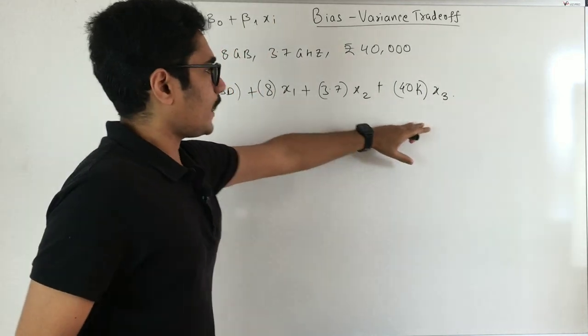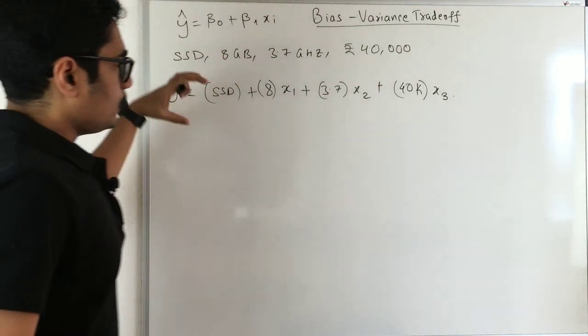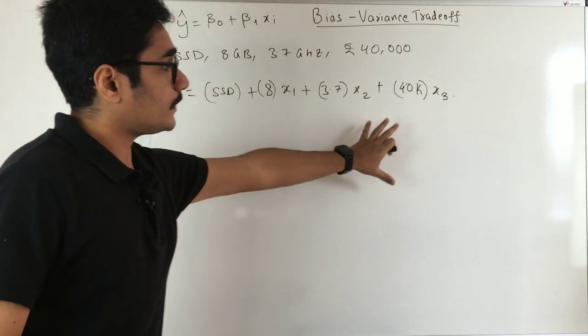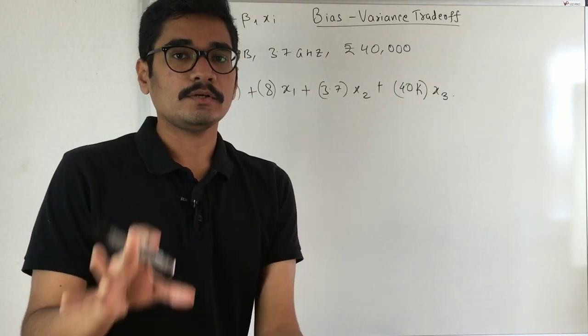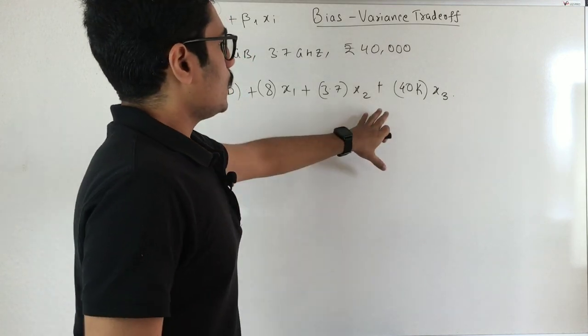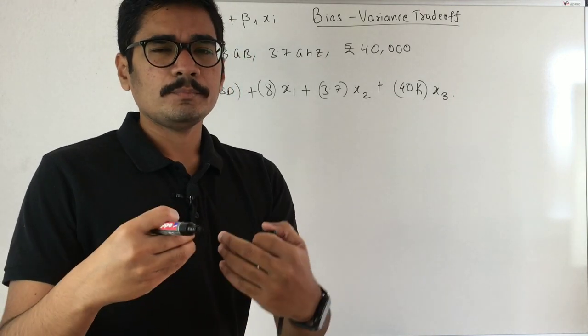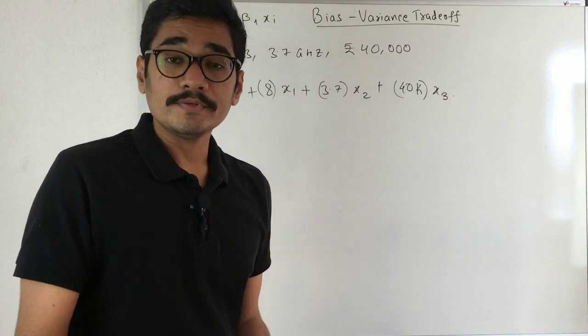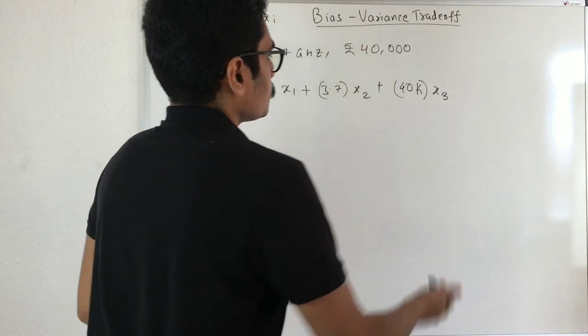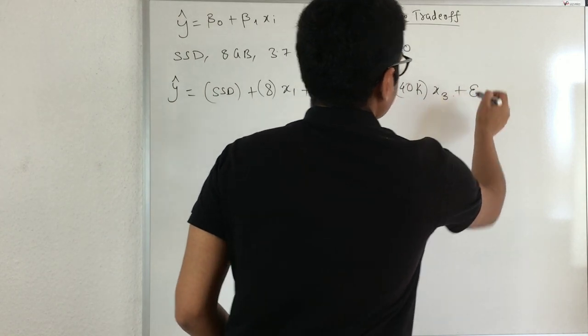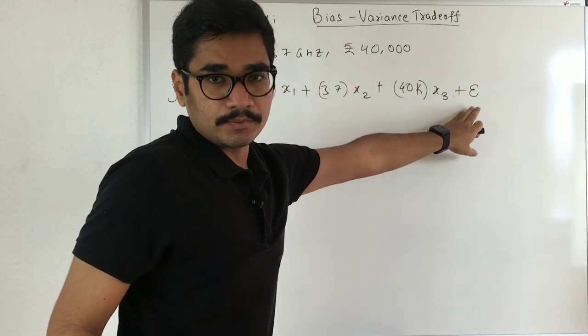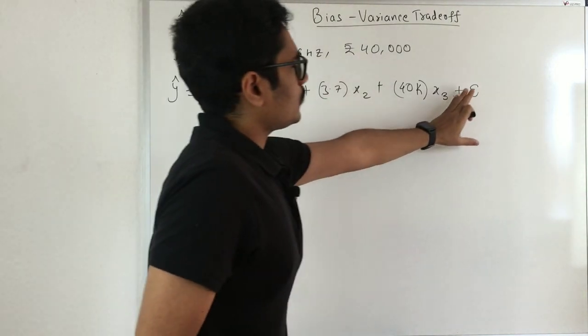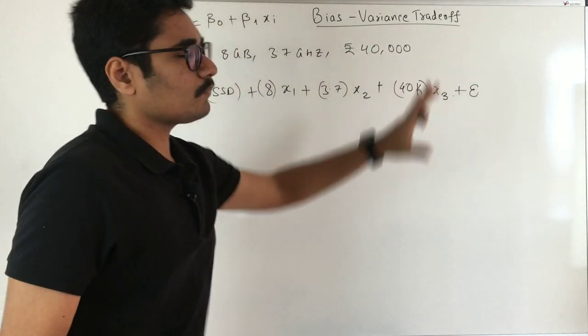When you see this particular thing, when you buy something, it will not always be satisfactory. For that, we're incorporating some errors, say epsilon. Now we say, okay, I just don't want the error. I'm not concerned with the error. I just want these many features.